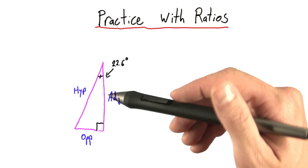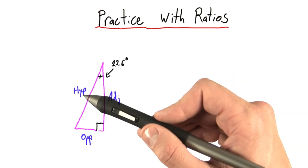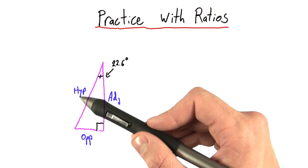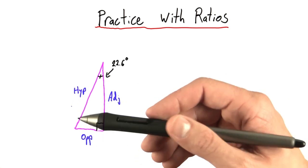And one thing to be careful of is not to call this side the adjacent side. Even though yes, it is next to this angle, we give this one the special name hypotenuse because it is the longest side.